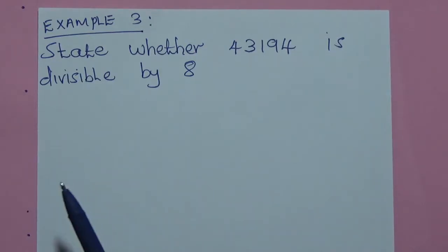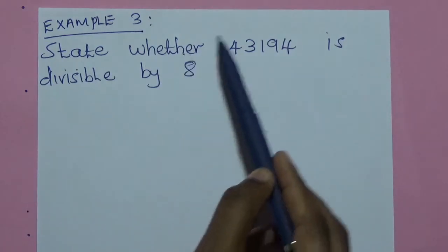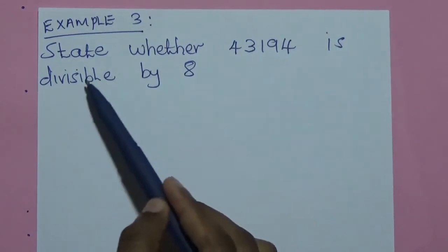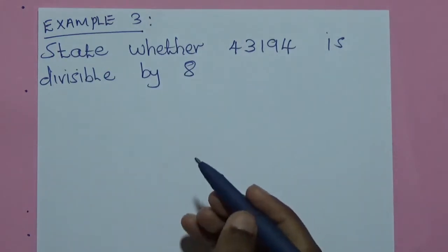Now, we look at our third example. We are told to state whether 43,194 is divisible by 8. We are going to use the same method.